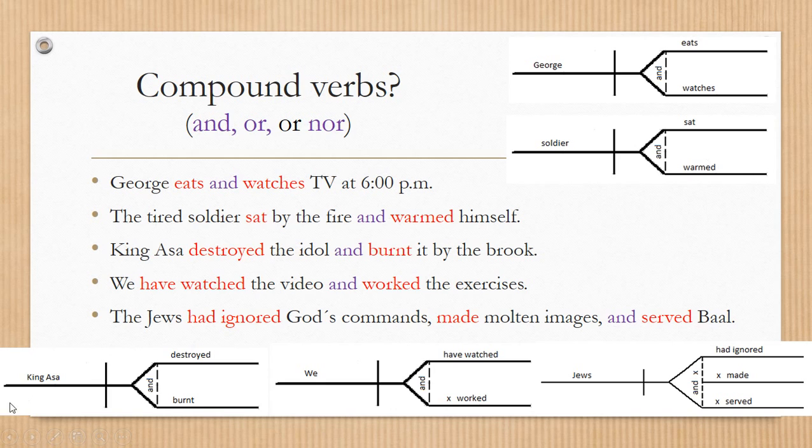Now, the tired soldier sat by the fire and warmed himself. Now we have King Asa destroyed the idol and burnt. And then we have watched and have worked. So we have placed that X because the auxiliary has been omitted for the second verb.